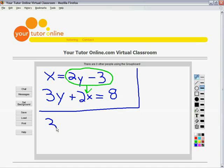So I'll begin to rewrite the second equation, 3y plus 2x, and instead of x we're going to put in what we know x is equal to. x is the same thing as 2y minus 3 is equal to 8.